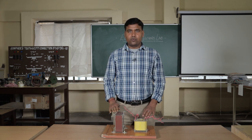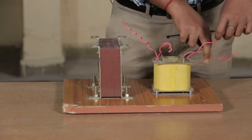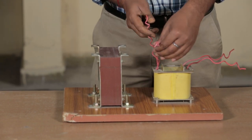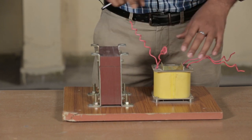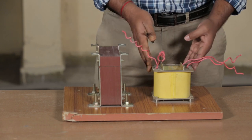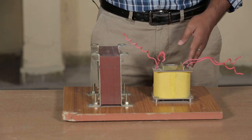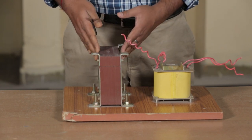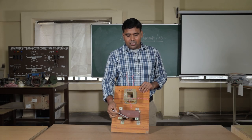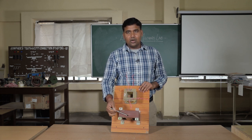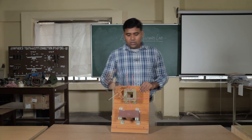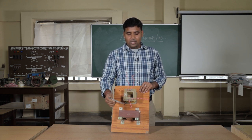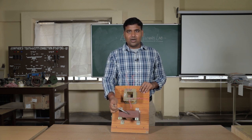This is the cutout section of a transformer. We can see two coils coming from the supply, which form the primary winding of the transformer. The load is connected to the secondary winding. If we have a three-phase transformer, three single-phase transformers are connected to a core. This is the core, which is basically an iron core. We can see laminations in the core to reduce the eddy current loss in the core.